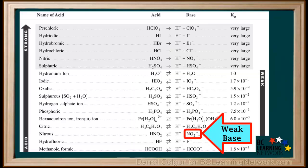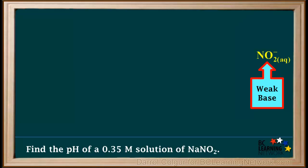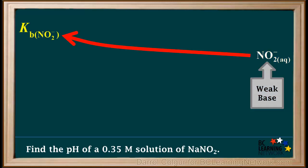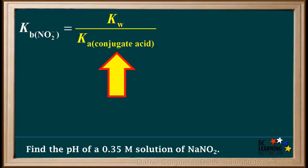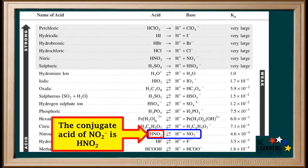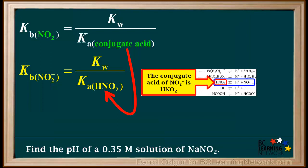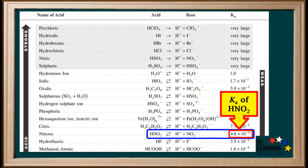NO2⁻ is at this location on the right side of the table, so it's a weak base. Because NO2⁻ is a weak base, we will need to find the value of its Kb. The formula we can use is: Kb equals Kw over the Ka of its conjugate acid. Looking at the table, we see that the conjugate acid of NO2⁻ is HNO2. So the Kb of NO2⁻ is Kw over the Ka of HNO2. The Ka for HNO2 is shown on the table here, and it's 4.6 times 10 to the negative 4th.